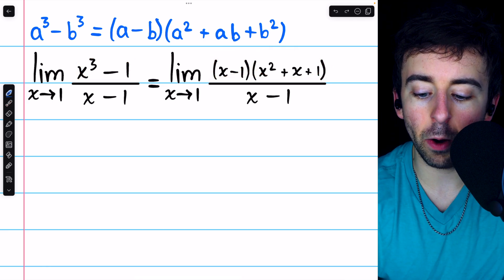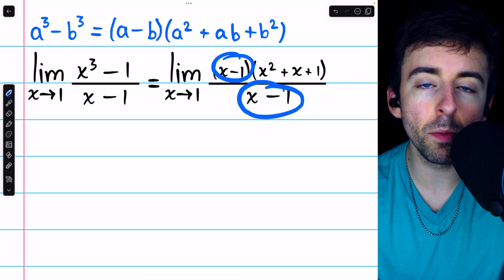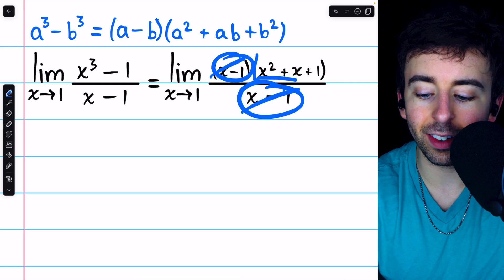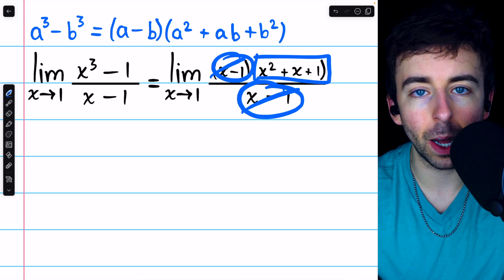Of course, we see now that there is a factor of x minus 1 in the numerator and denominator, and so we can cancel those out, leaving just this quadratic expression behind.